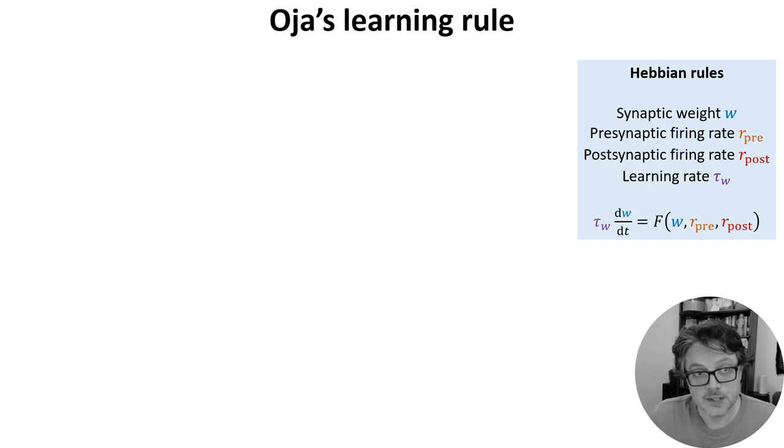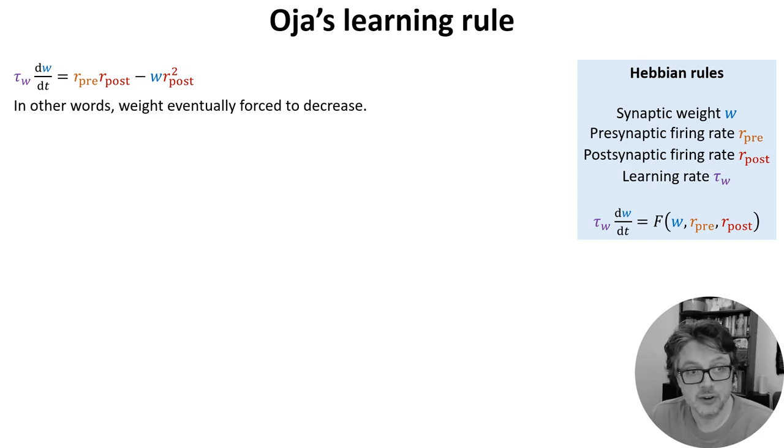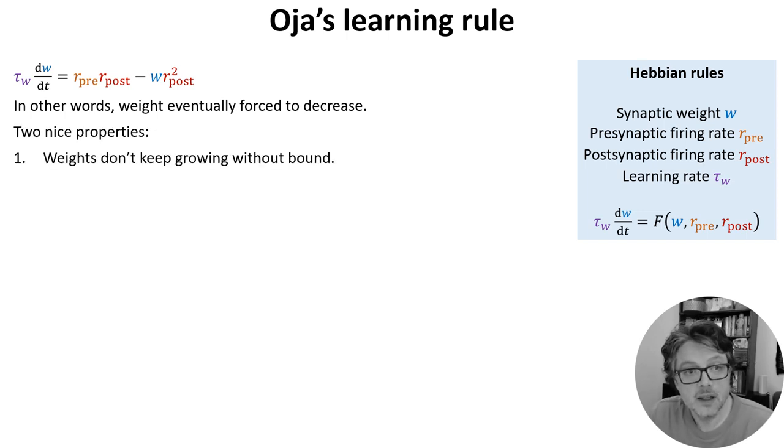So Oja's learning rule was designed to solve the problem of the rates growing without bound. You take the standard Hebbian rule and you subtract off a term proportionate to the product of the weight and the square of the postsynaptic firing rate. In other words, after growing for a while, the weights will stop changing. And this has two nice properties. The first is that, as we hoped for, the weights don't keep growing.